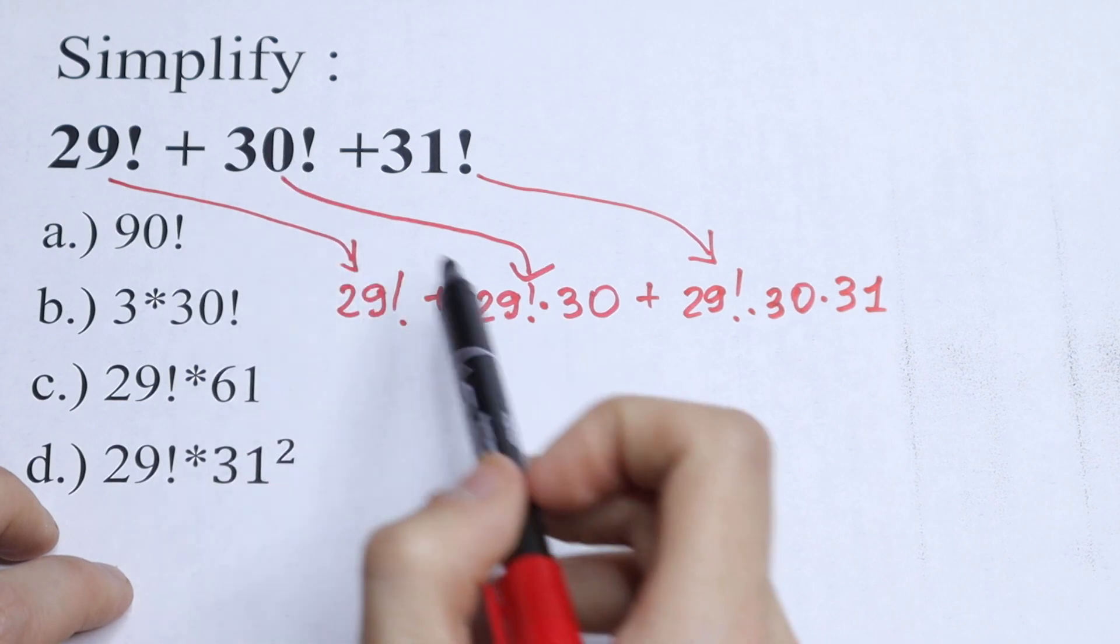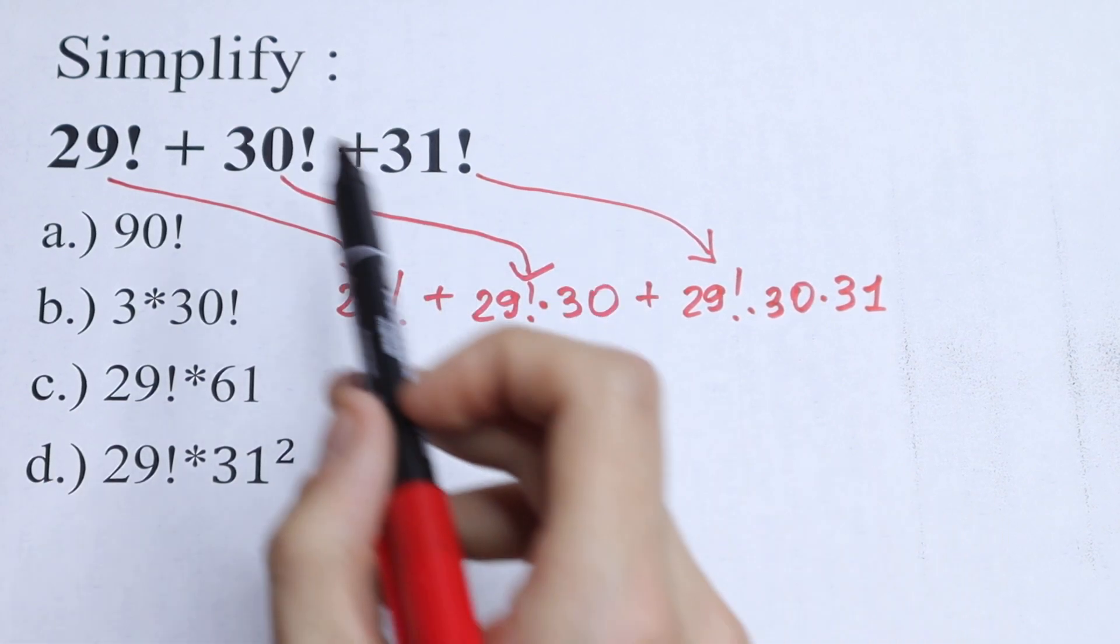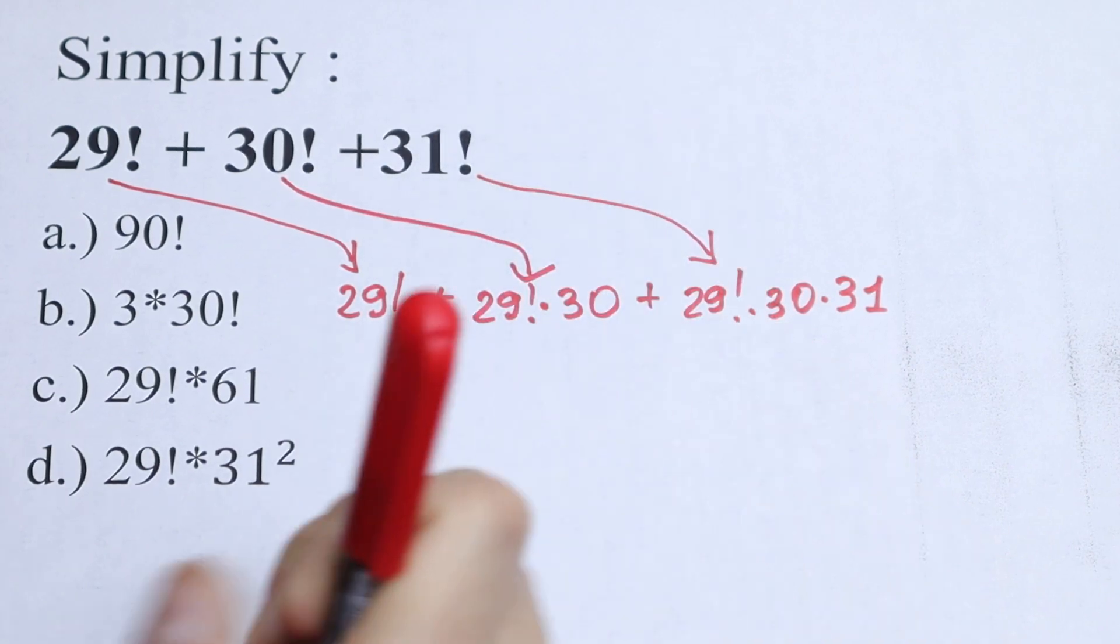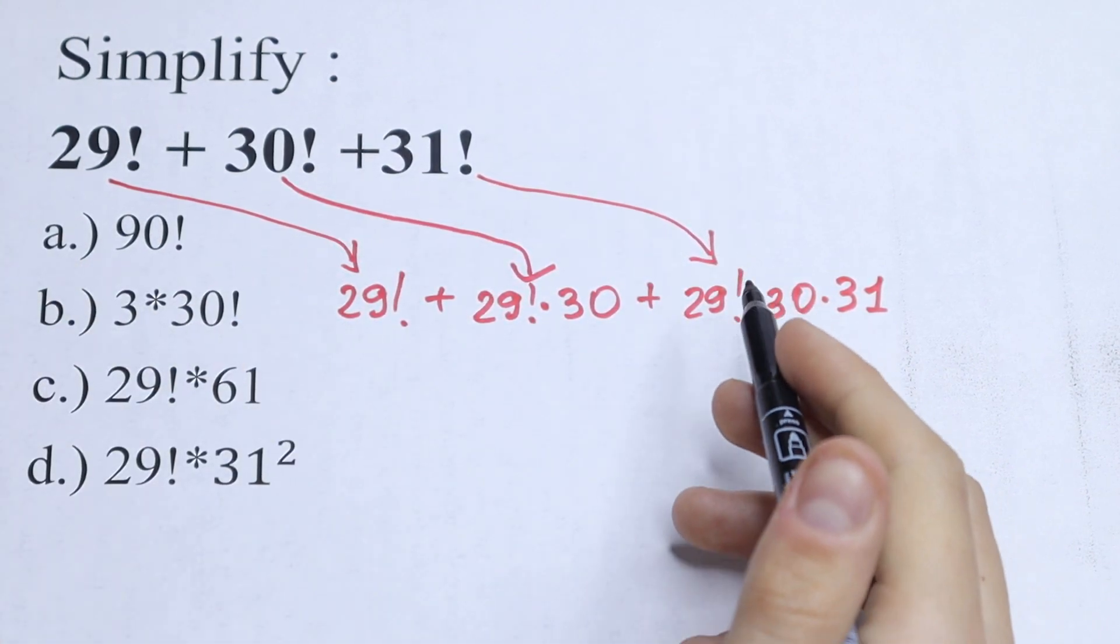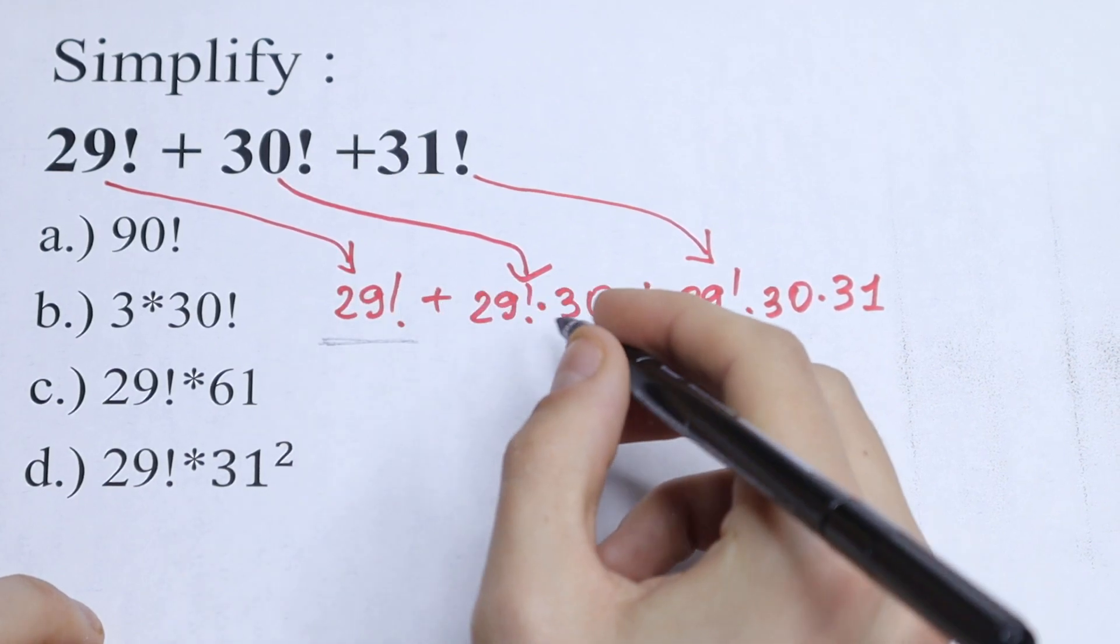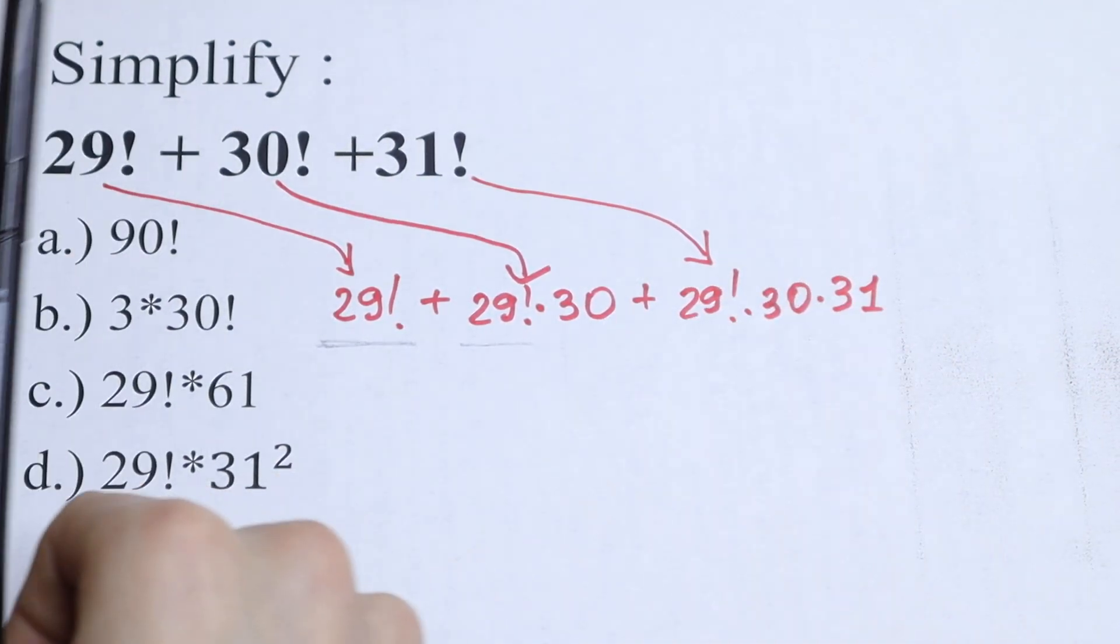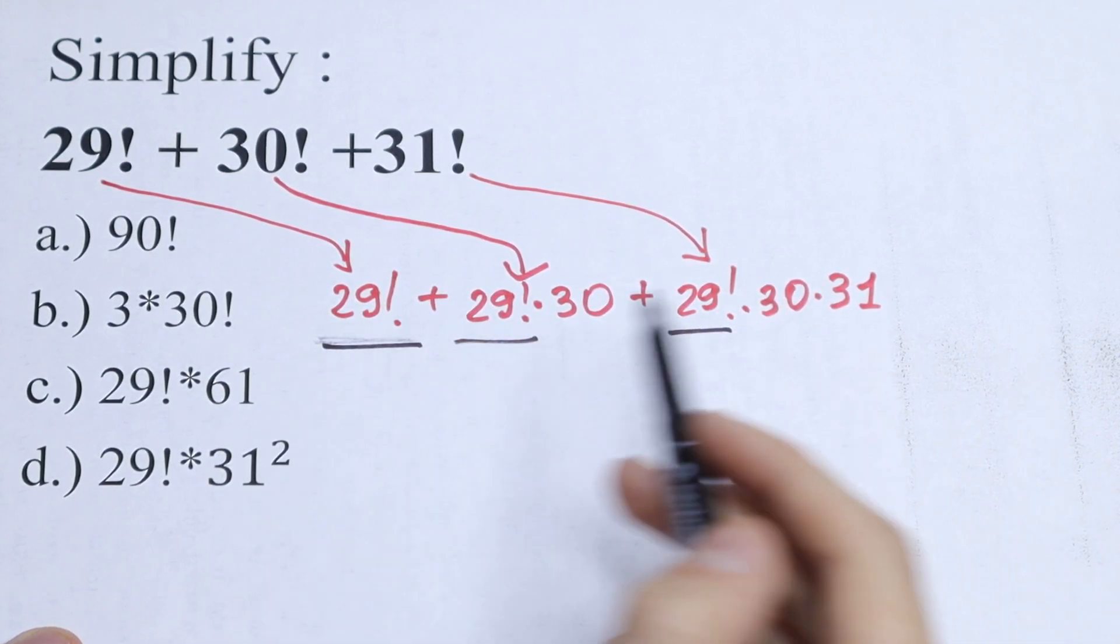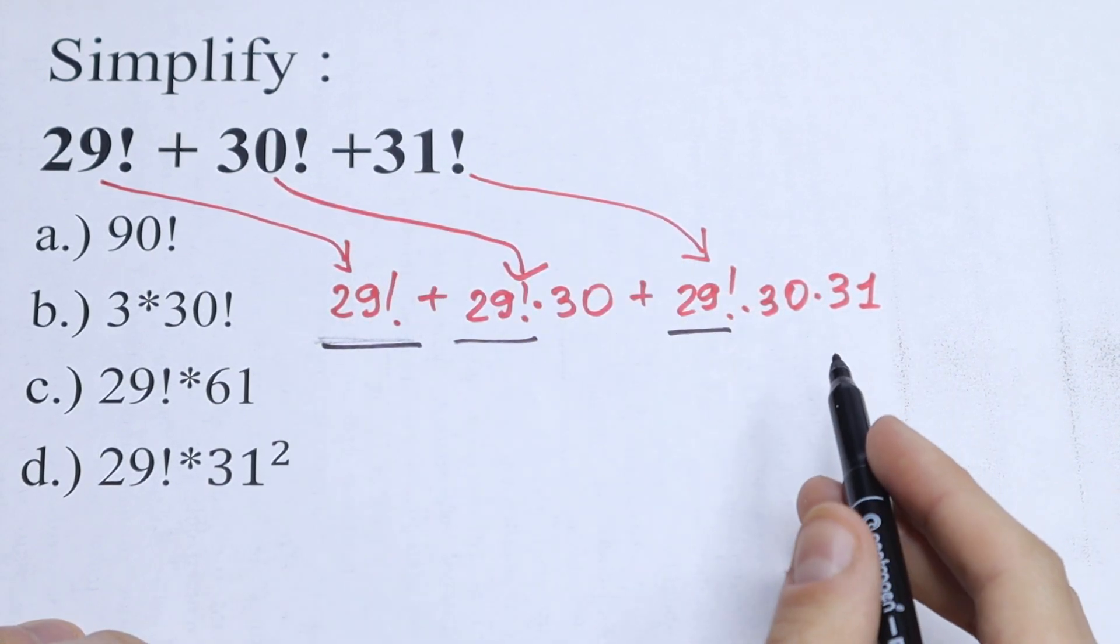This is the same: 29 factorial times 30, we need 30, and this is 29 times 30 and 31. But take a look right here, we have 29 factorial, we have 29 factorial right here, and we have 29 factorial right here. So we have 3 factorials, so we can factor out this 29 factorial.